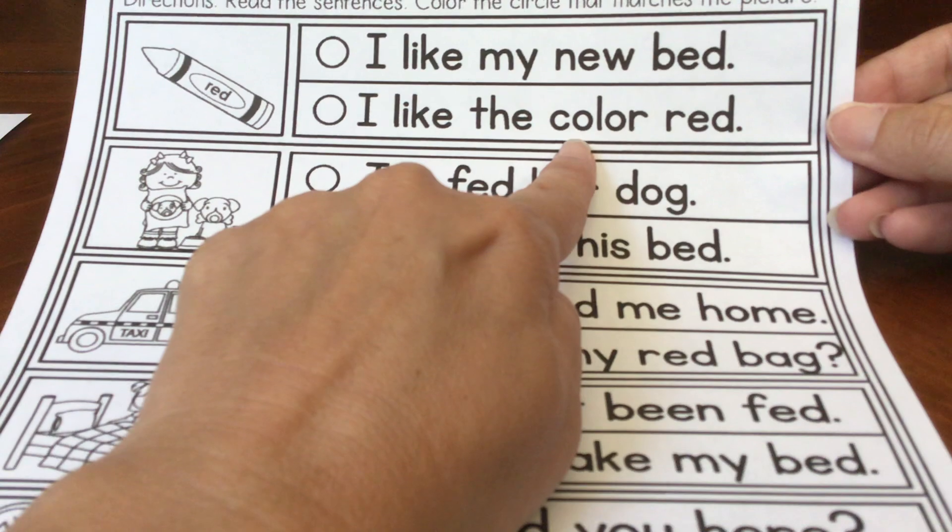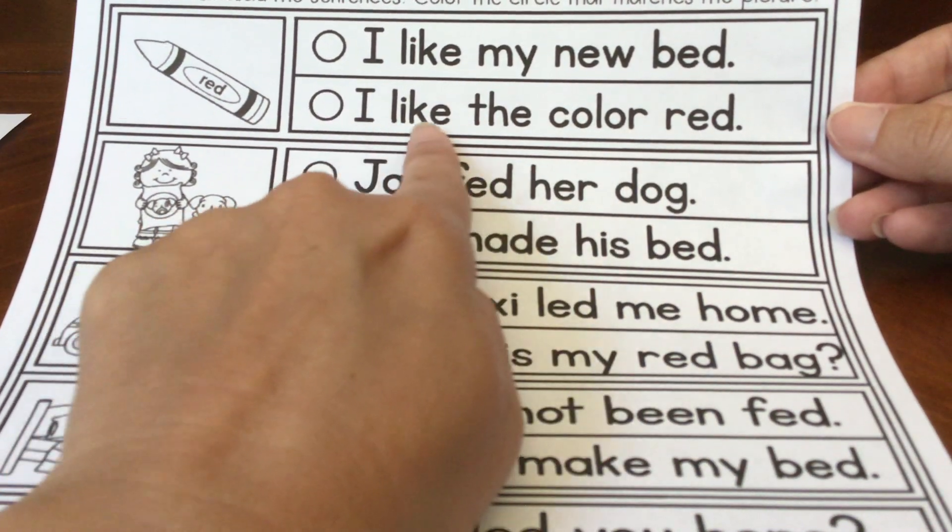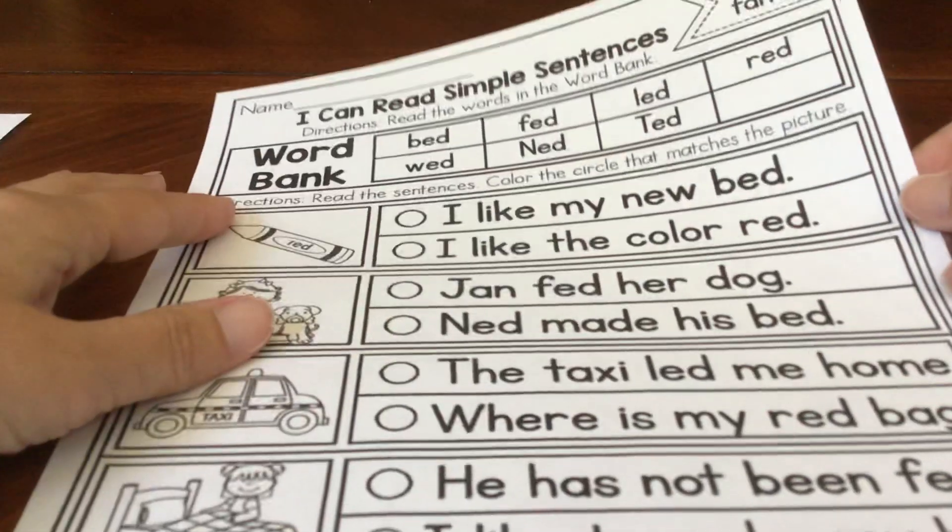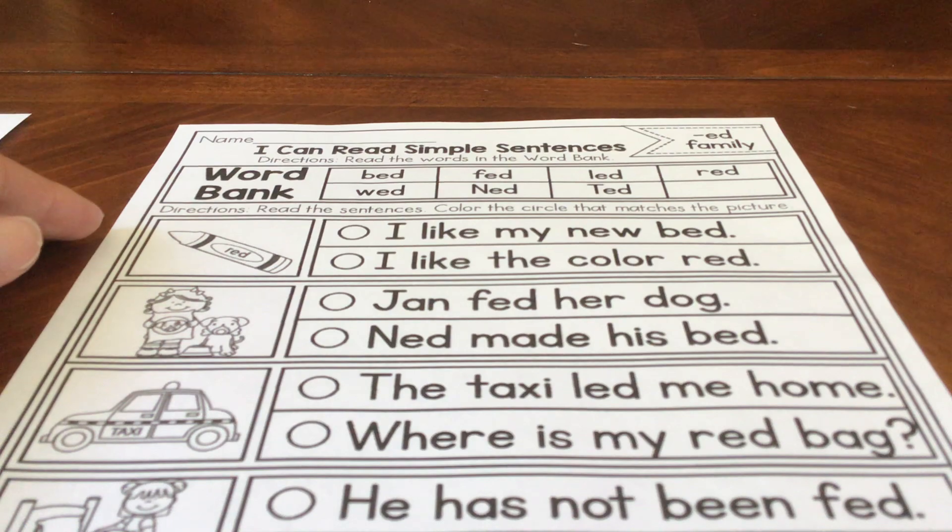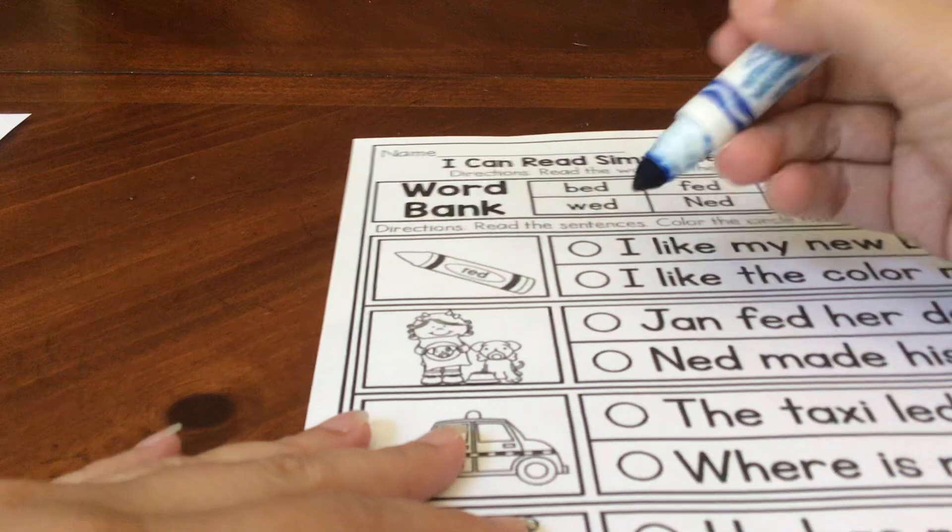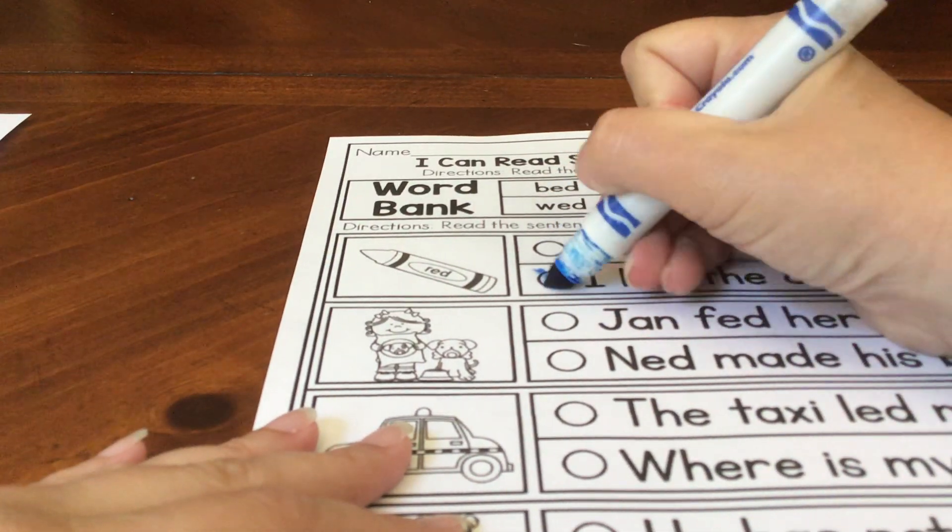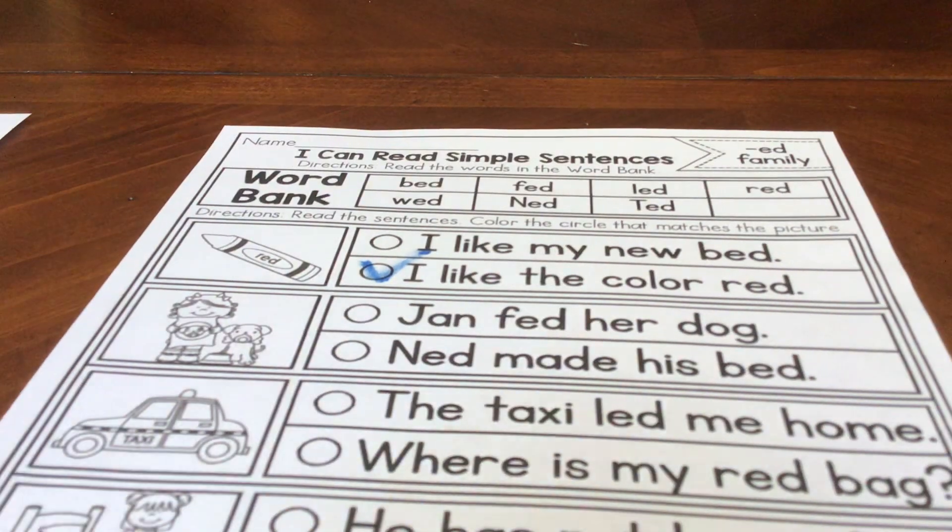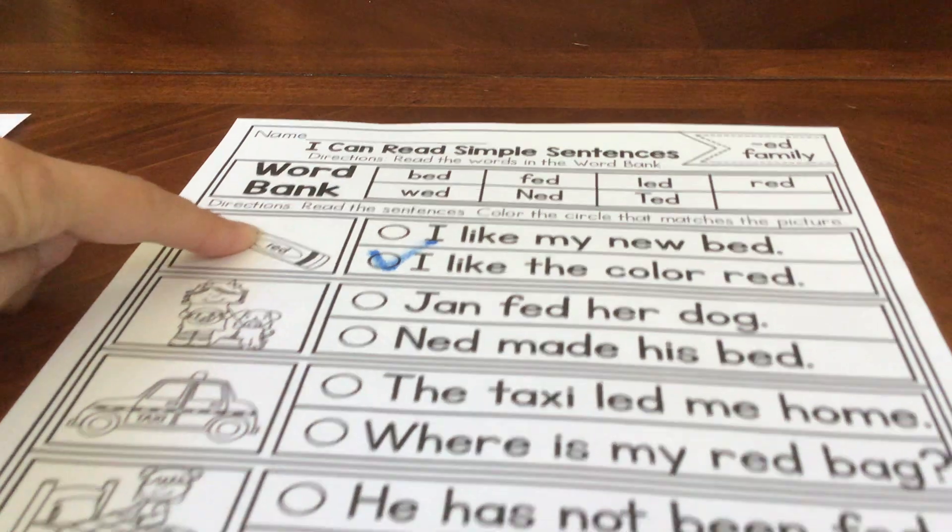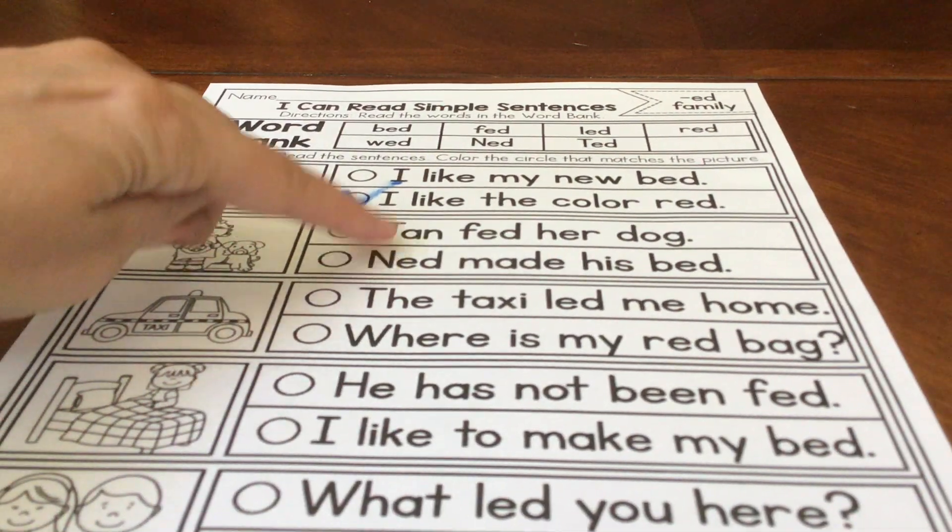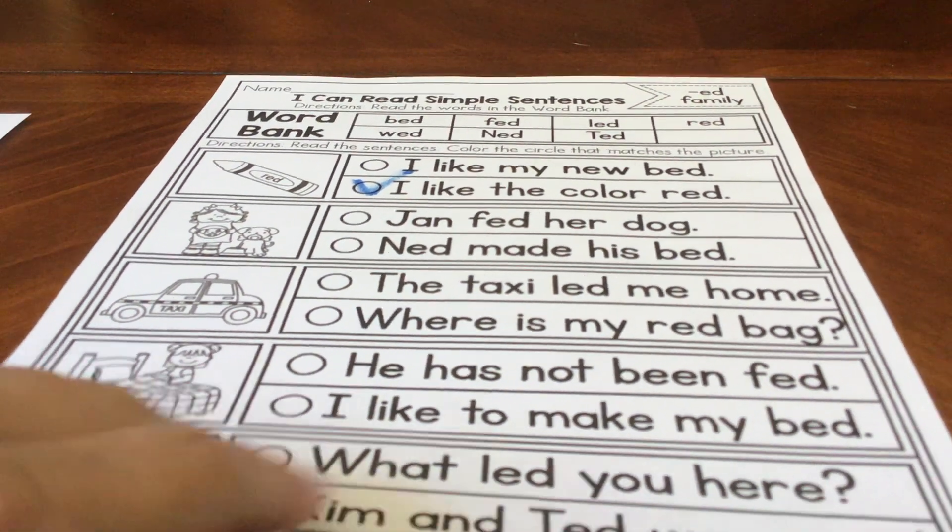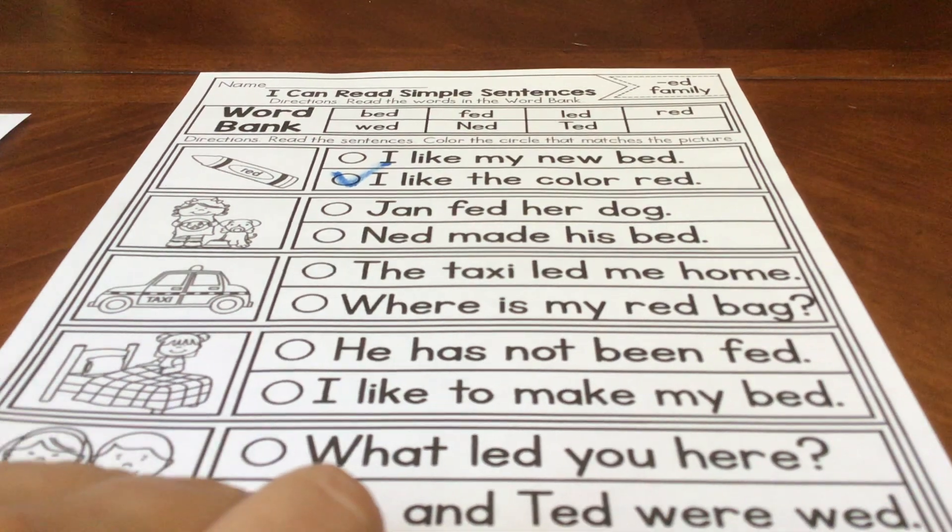I like the color red. I like the color red. Does that go with this picture? Yes. I like the color red, not I like my new bed. So you're going to get something to mark that circle with. You can put a big check mark in that circle or color that circle in. However you want to mark it to show that this is the sentence that goes with this picture. And look at your next picture. Read those two sentences and decide which one matches the picture. Great job. That's all for today. I will see you again tomorrow. Keep up the great work.